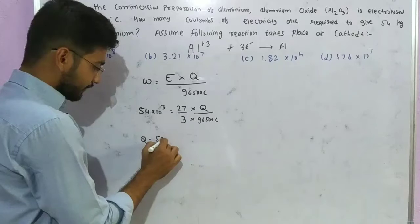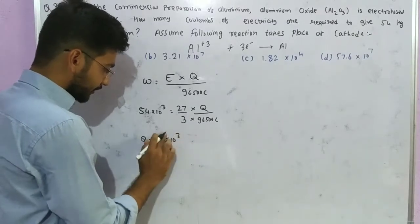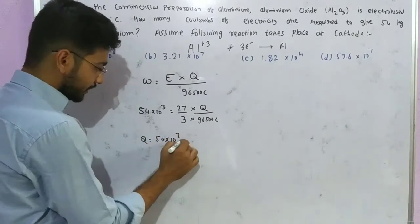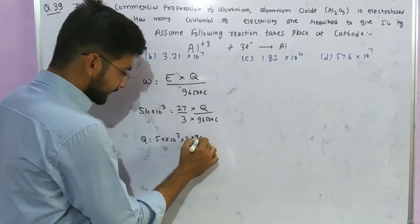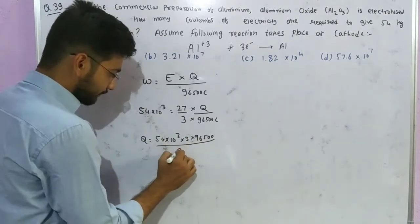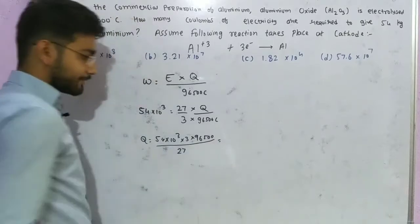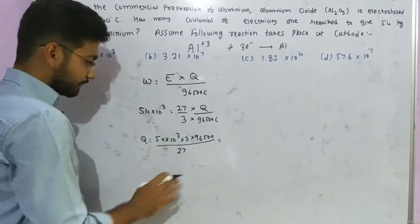After simplification, the charge equals 54 times 10 to the power 3 times 3 times 96,500 coulombs divided by 27. Now we solve this calculation.